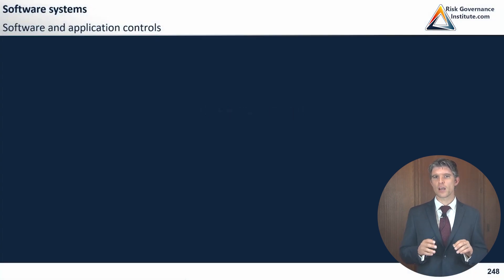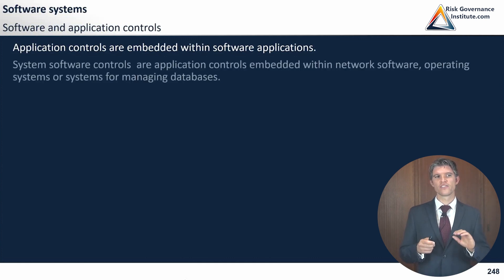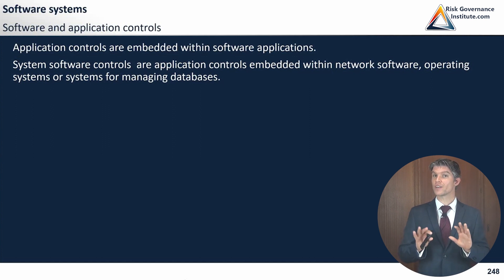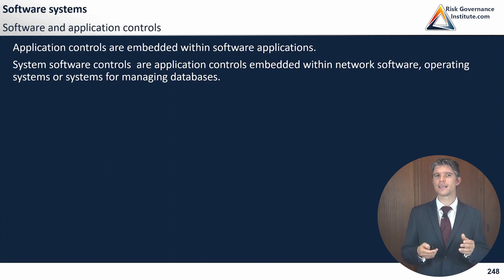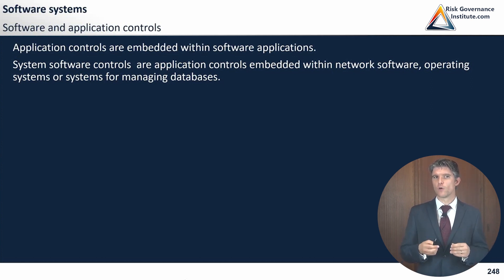Looking at software and application controls, we have to understand that application controls should be embedded within different software applications. System software controls are a kind of application control embedded within the more technical sides — the network software, the operating system, and systems for managing different databases. We'll look at the different controls starting from input all the way to output.